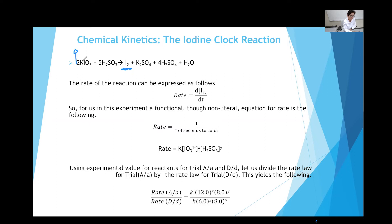If you increase the concentration of reactant 1, the rate increases. If you increase the concentration of reactant 2, the rate also increases. Think of it like traveling from point A to point B — the faster you go, the less time it takes to get there. So if it takes less time for iodine to form, that means the reaction is faster. The higher the rate, the faster the reaction — it takes less time.